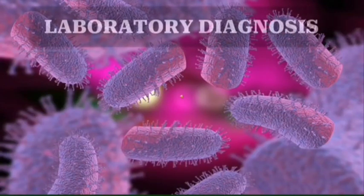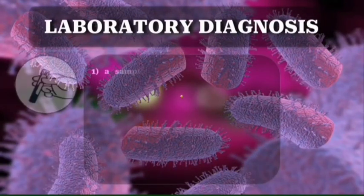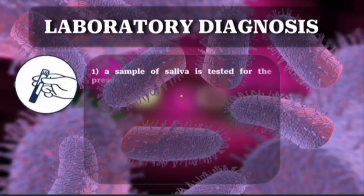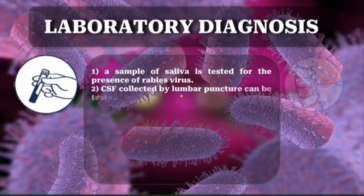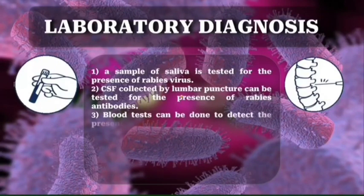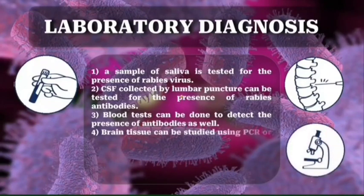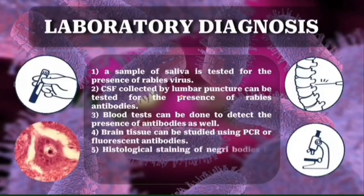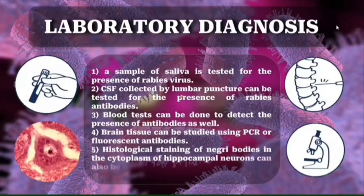Laboratory diagnosis. The laboratory diagnosis of rabies can be done using the following. A sample of saliva is tested for the presence of rabies virus. CSF collected by lumbar puncture can be tested for rabies antibodies. Blood tests can detect the presence of antibodies. Brain tissue can be studied using PCR or fluorescent antibodies. Histological staining of Negri bodies in the cytoplasm of hippocampal neurons can also be done.